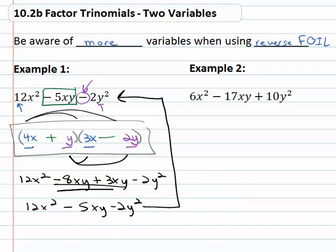Let's try another example — factor 6x² minus 17xy plus 10y². We know we want to multiply to 6x² with first times first, so that might be 3x times 2x. We also know that last times last has to equal 10y squared. Well, 10y² could be 5y times 2y — but careful, notice there's a GCF in the second binomial. Those are both divisible by 2.